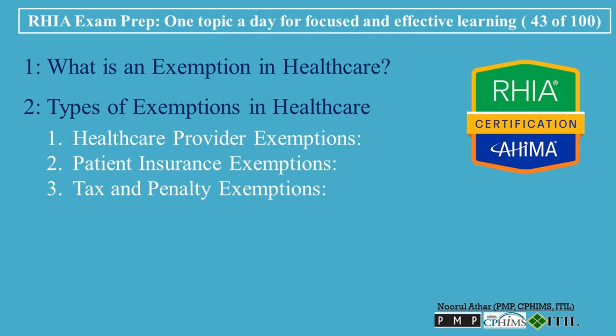Tax and Penalty Exemptions: Exemptions are often granted to individuals or organizations to avoid penalties, particularly related to health insurance mandates or tax liabilities. For example, if a patient is unable to afford health insurance, they may be exempt from paying penalties under the individual mandate. Similarly, healthcare organizations may receive tax exemptions based on their non-profit status or specific government regulations.